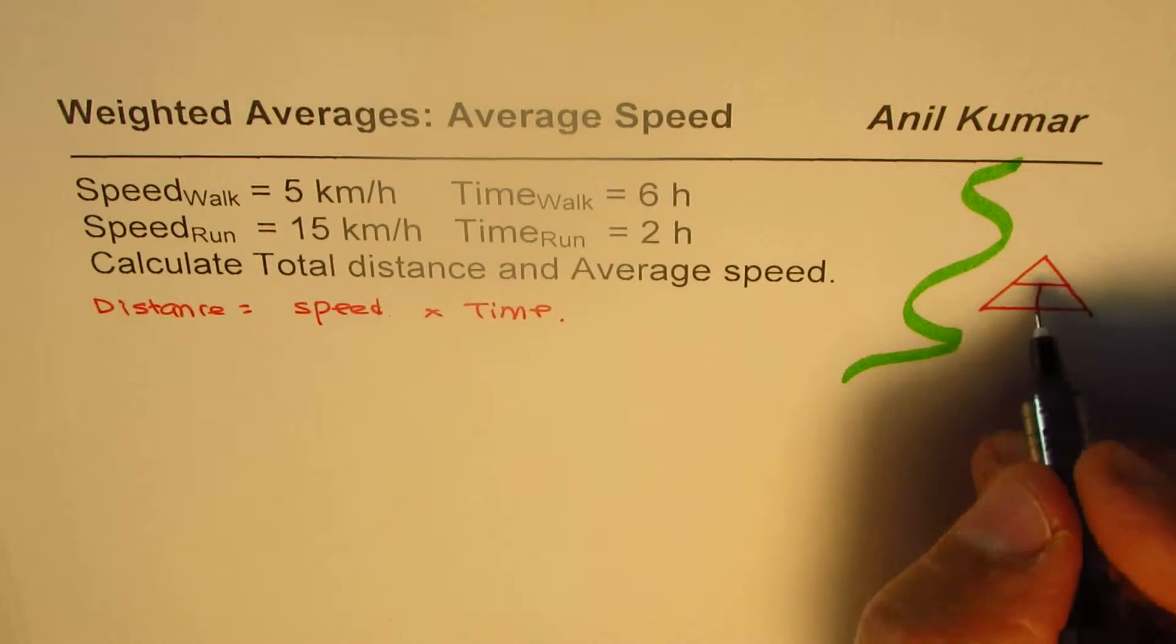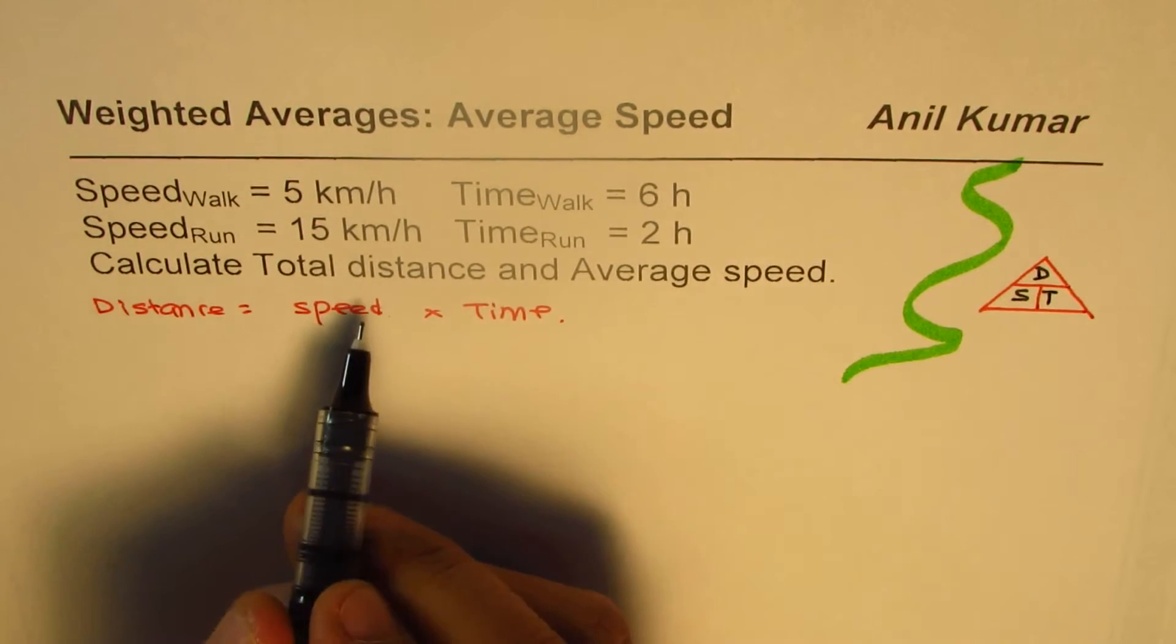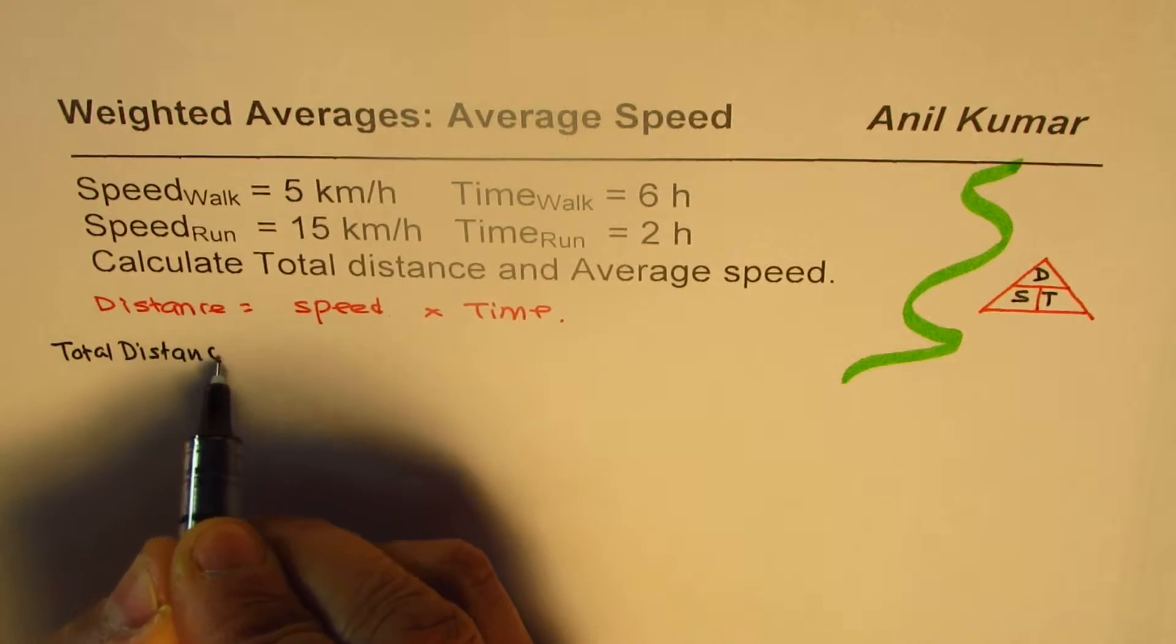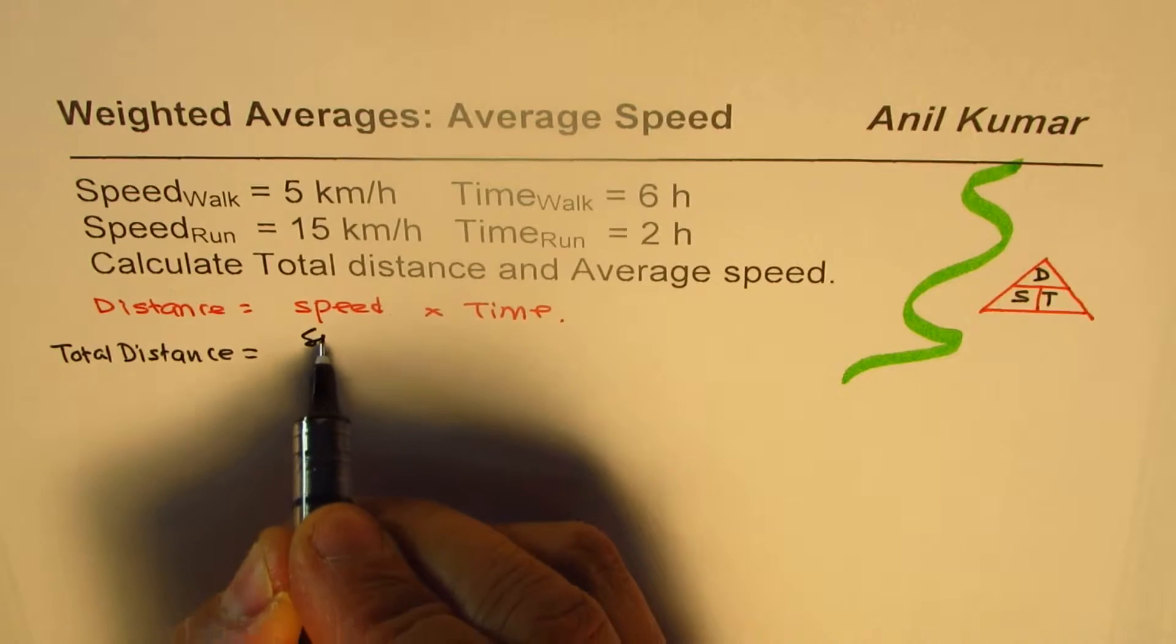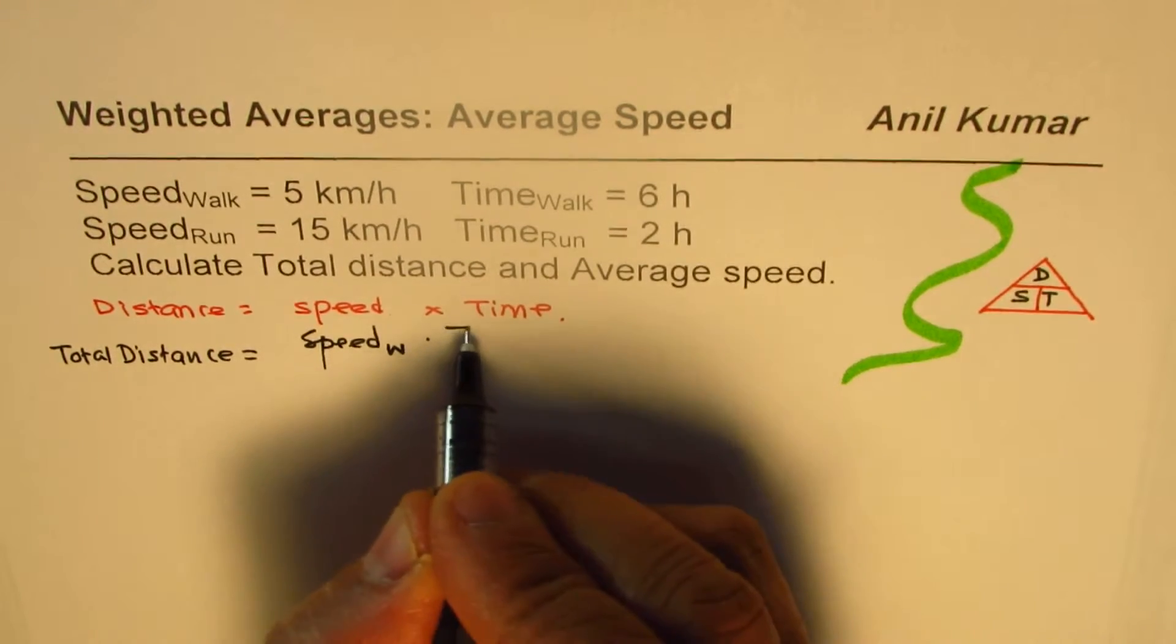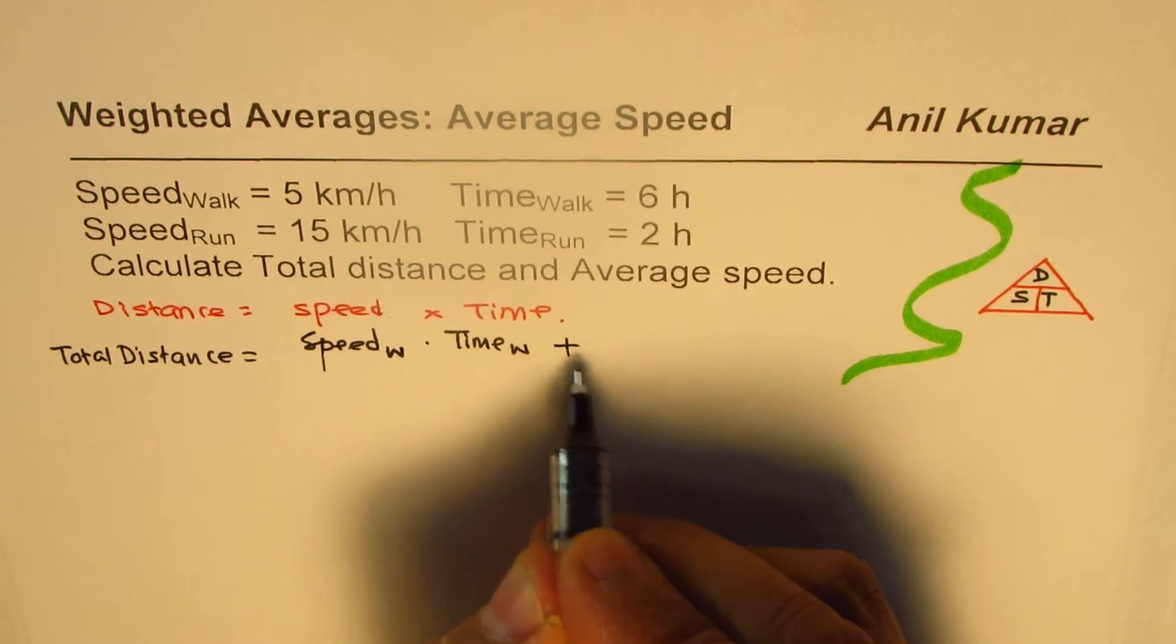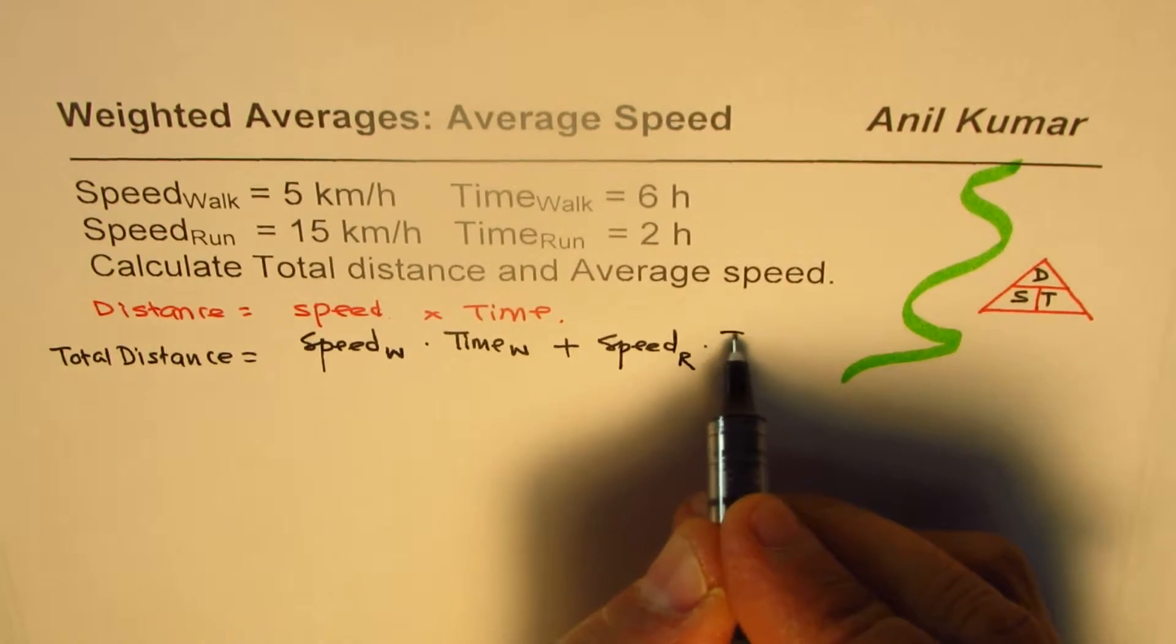To find the total distance, we can say total distance is equal to speed of walking times time of walking, so that is the distance covered while walking, plus speed running times time running. So that gives us the total distance.